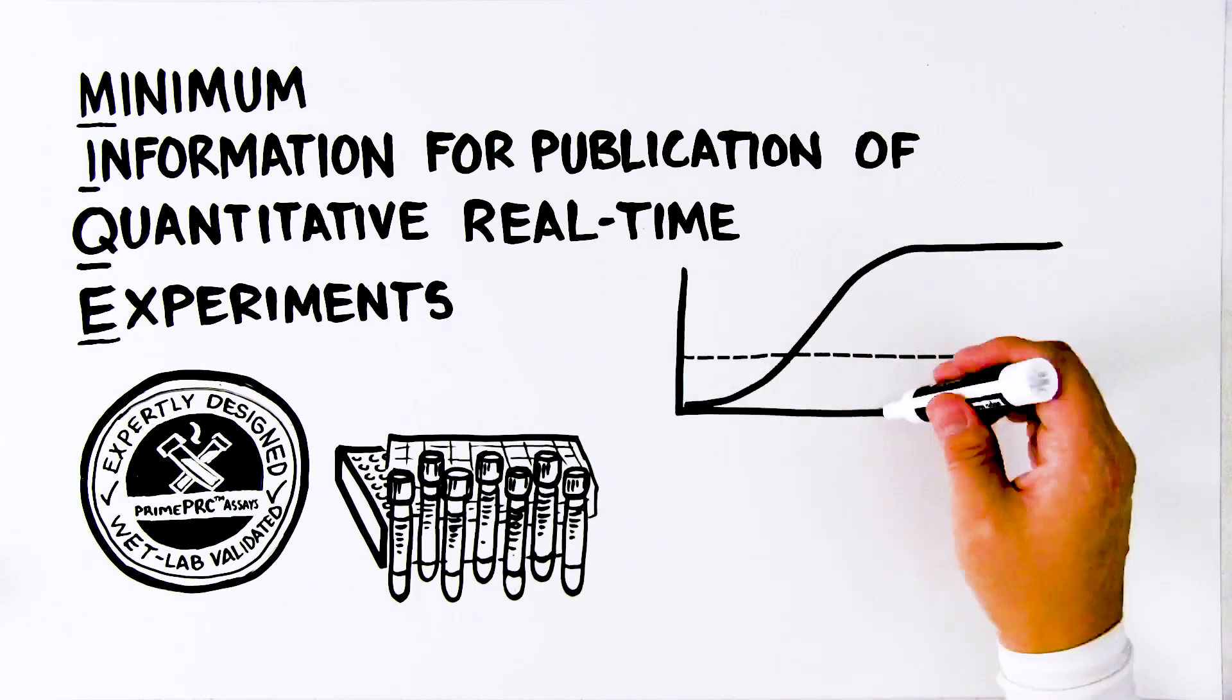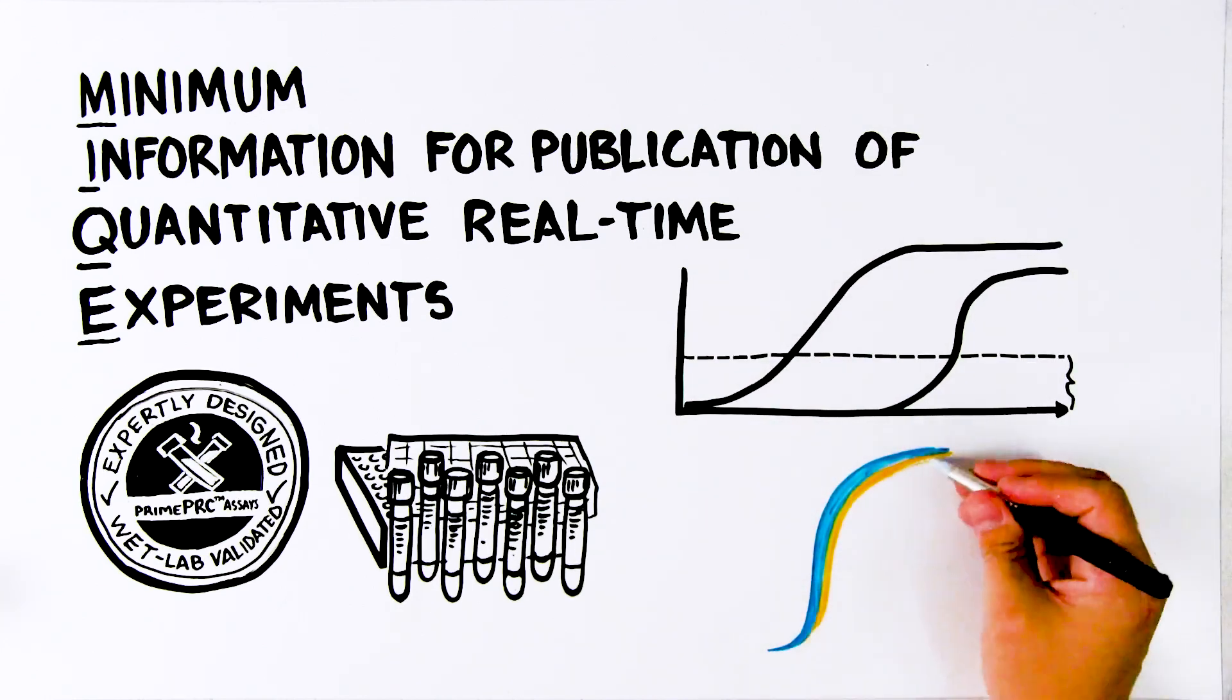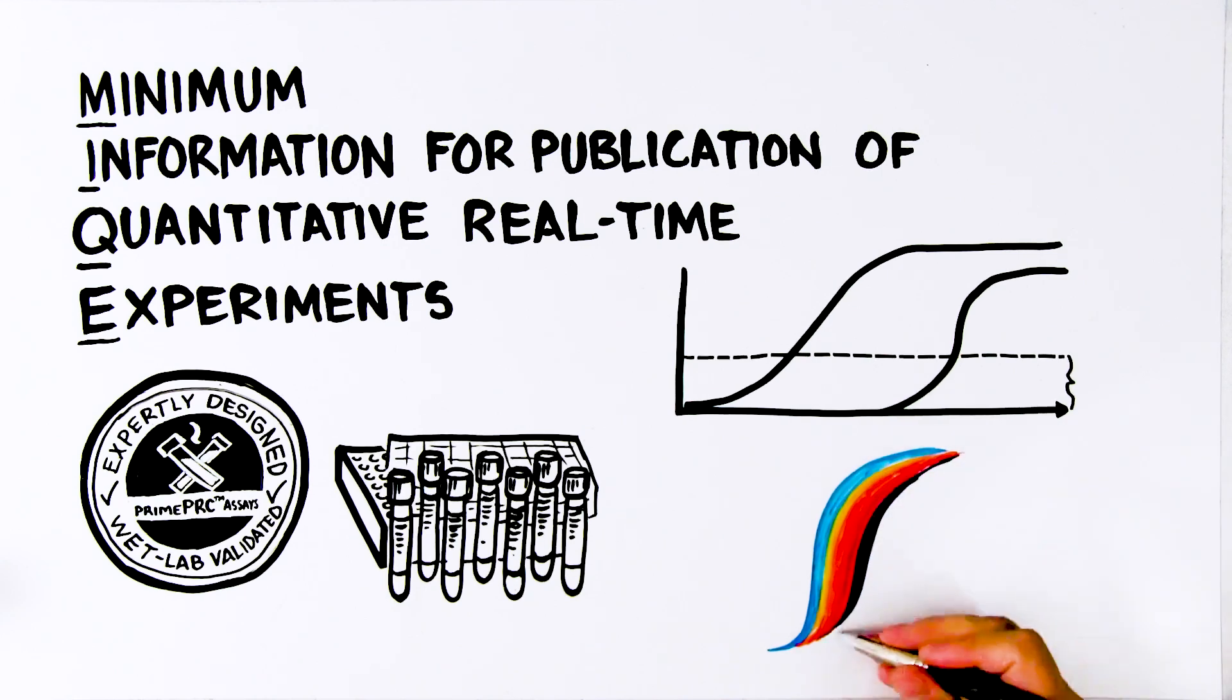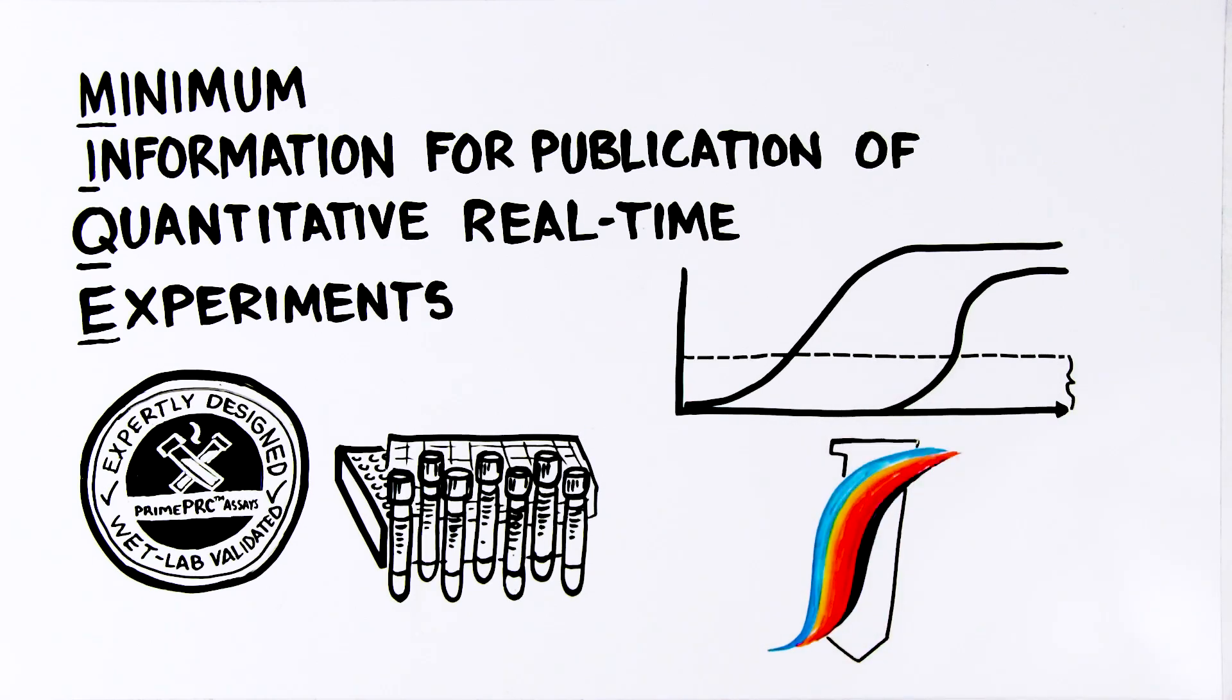Therefore, fluorophores were selected with minimal spectral overlap to reduce signal crosstalk, and the brightest ones were applied to the least abundant targets to improve signal-to-noise ratio.